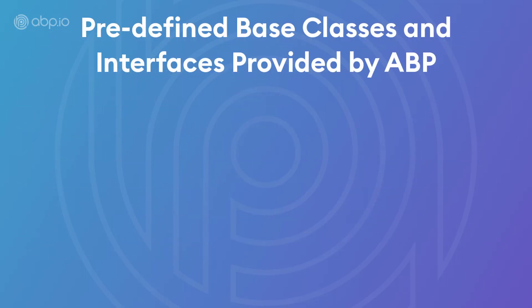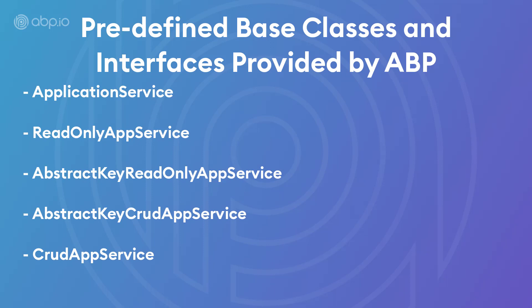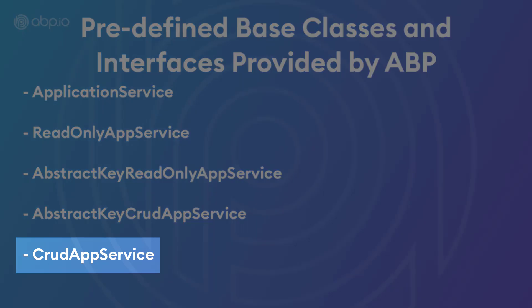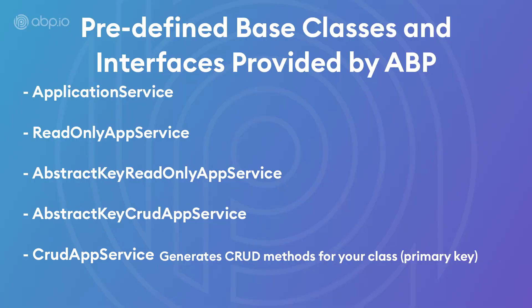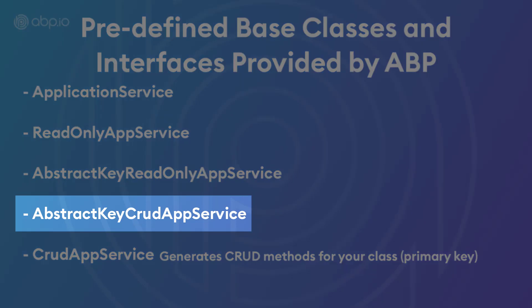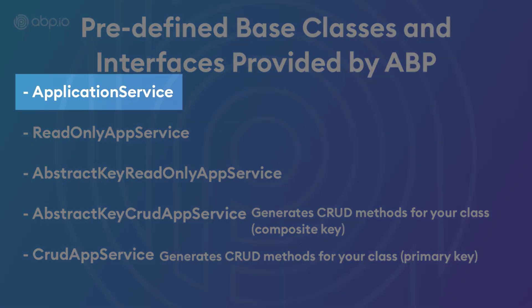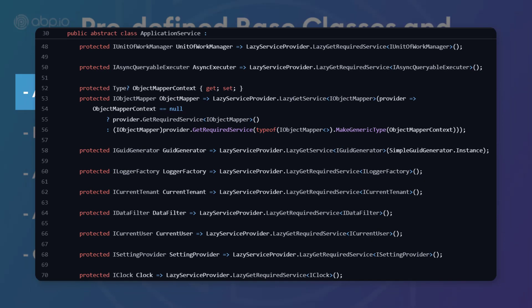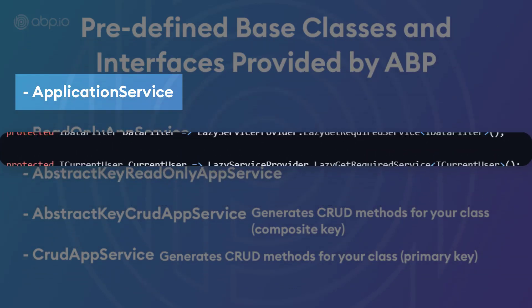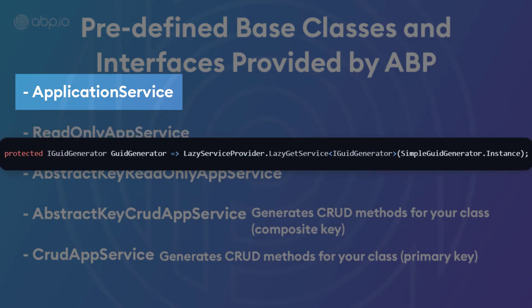There are some base classes and interfaces we can implement that will make our lives much easier. They are: ApplicationService, ReadOnlyAppService, AbstractKeyReadOnlyAppService, AbstractKeyCrudAppService, and CrudAppService. The CrudAppService generates CRUD methods for you — all you have to do is pass in your class. It assumes you're using a primary key, which is why we also have the AbstractKeyCrudAppService for composite keys. The ApplicationService base class includes a lot of helpful features such as the object mapper, current user, current tenant, GUID generator, and the unit of work manager.